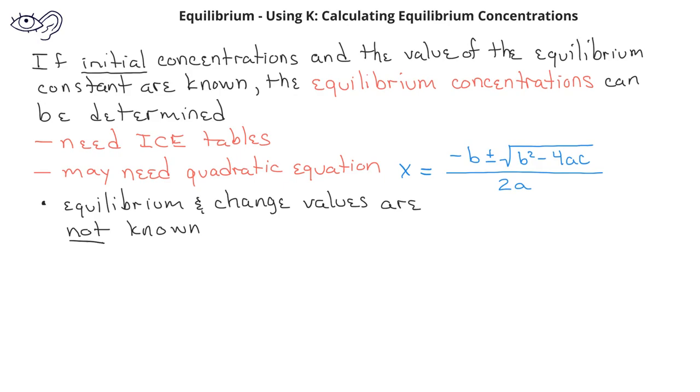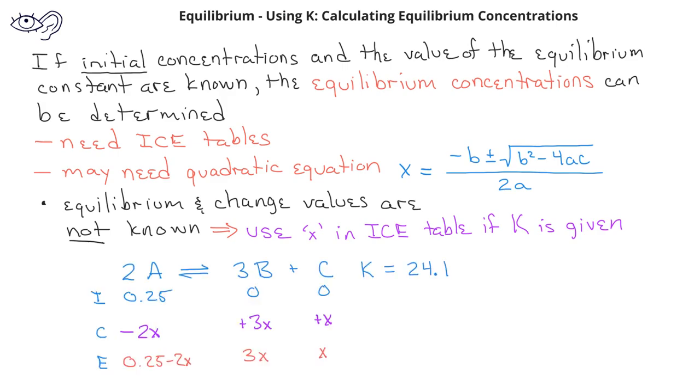When we don't know a value, we use the value X as a substitute. So in those situations when you're using an ICE table and you are given the value of an equilibrium constant, you will need to use X in the change rows for those situations.